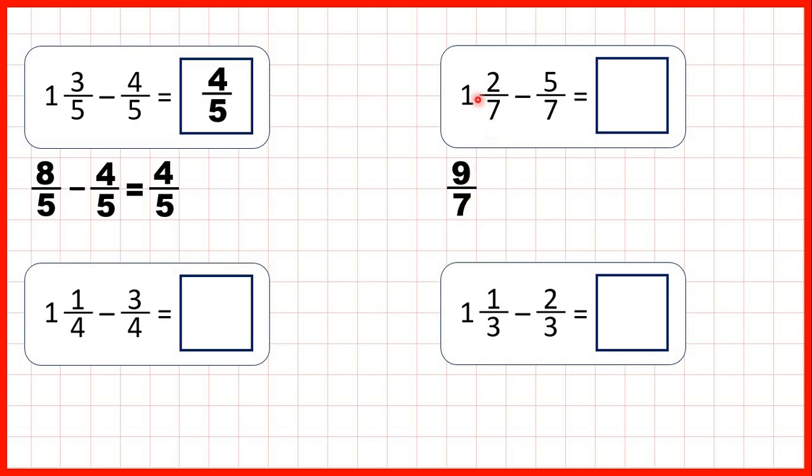So now we've found that 1 and 2 sevenths is the same as 9 sevenths, so we can subtract our 5 sevenths. The denominator stays the same, and 9 minus 5 is 4, so our answer is 4 sevenths.